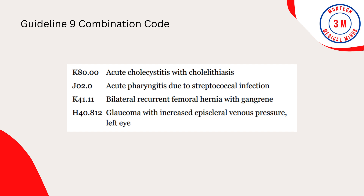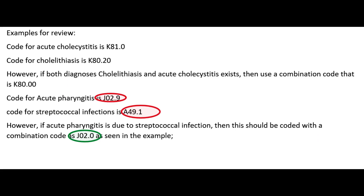Guideline 9: Combination Code. A combination code is a single code used to classify two diagnoses, or a diagnosis with an associated secondary process or manifestation, or a diagnosis with an associated complication. Example: The code for acute cholecystitis is K81.0 and the code for cholelithiasis is K80.20; however, if both diagnoses exist together, use the combination code K80.00. The code for acute pharyngitis is J02.9 and streptococcal infection is A49.1; however, if acute pharyngitis is due to streptococcal infection, use the combination code J02.0.